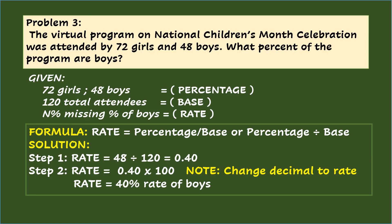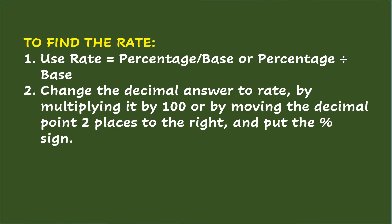Take note that since we are looking for the rate, which must have a percent sign, change the decimal 0.40 to percent. Step 2: in changing 0.40 to rate, multiply the decimal by 100 or simply move the decimal point two places to the right. So rate equals 0.40 times 100. The missing rate is 40%, which is the rate for boys. To find the rate: Number 1, use rate equals percentage over base. Number 2, change the decimal answer to rate by multiplying it by 100 or moving the decimal point two places to the right and add the percent sign.